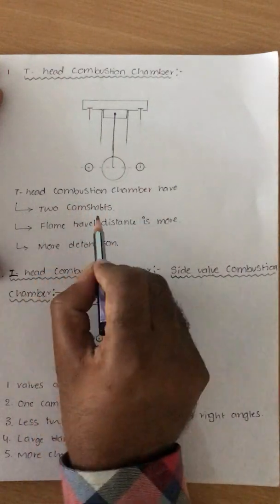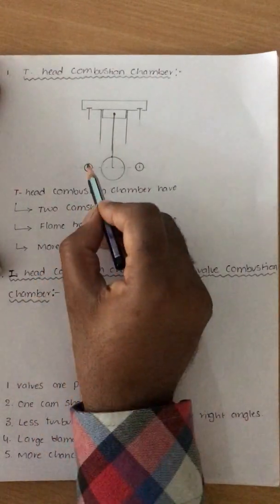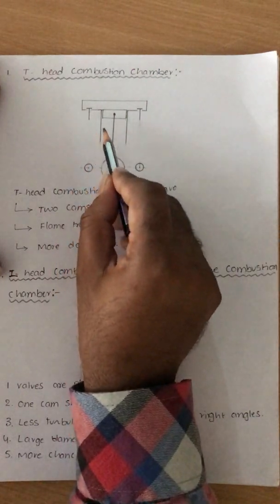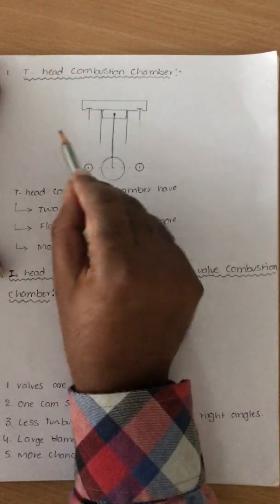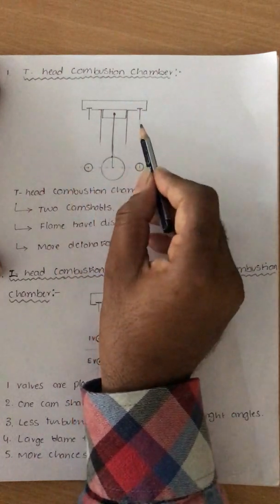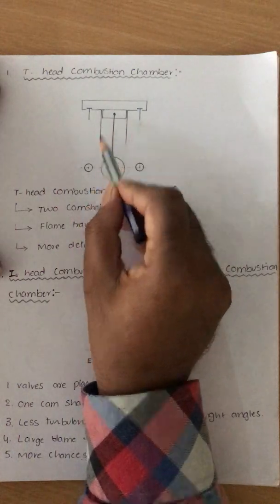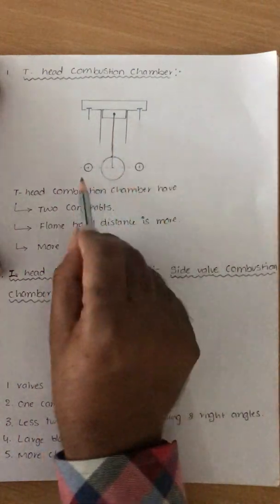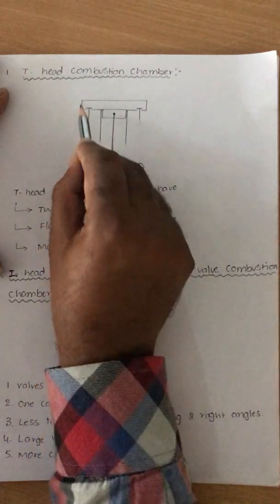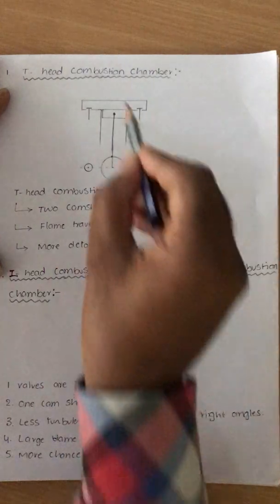T-head combustion chambers have two camshafts — this is the greatest disadvantage. Because these two valves are not side by side; one valve is on one side of the engine and another valve is on the opposite side. So these two valves are operated by two camshafts. This design also ensures more flame travel distance, which is very, very high.